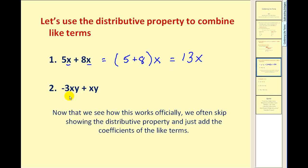On this example, it's easy to see that both terms have the factors x, y. But one thing I see in this problem is that there is no coefficient or number in the front of xy. Remember that's an implied one.